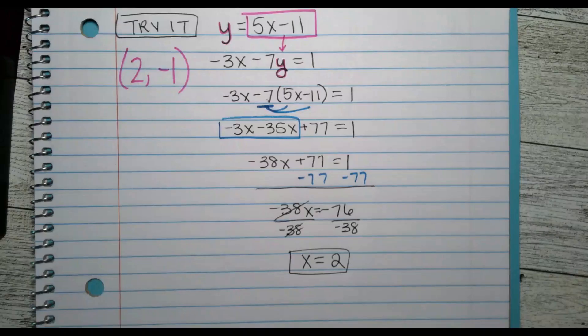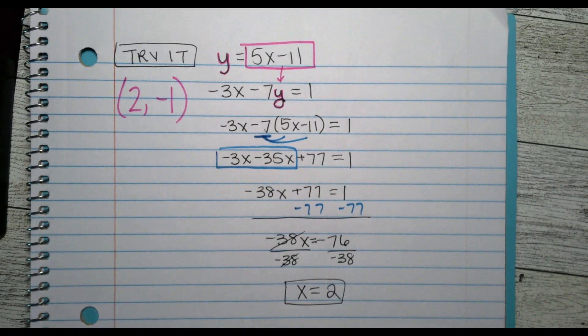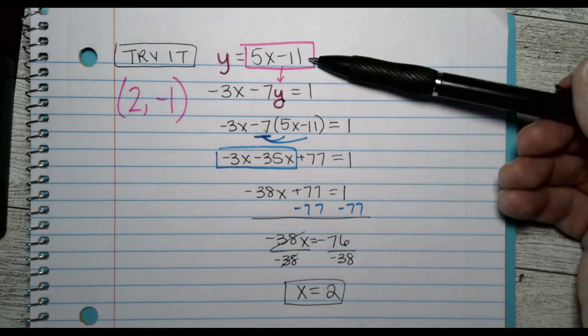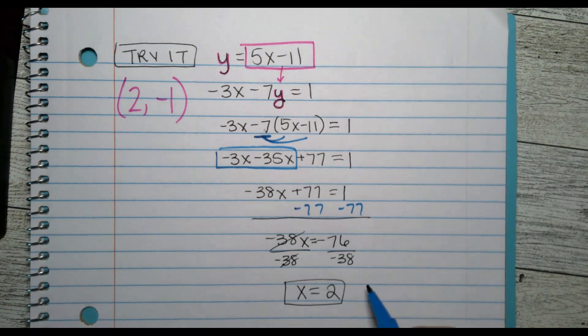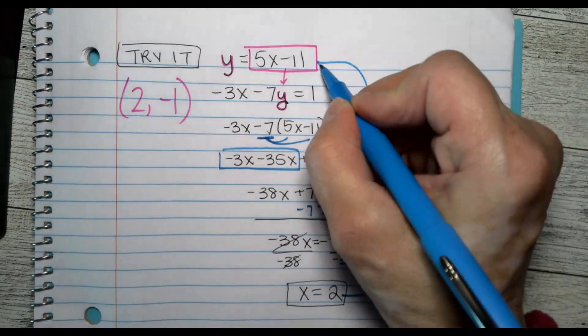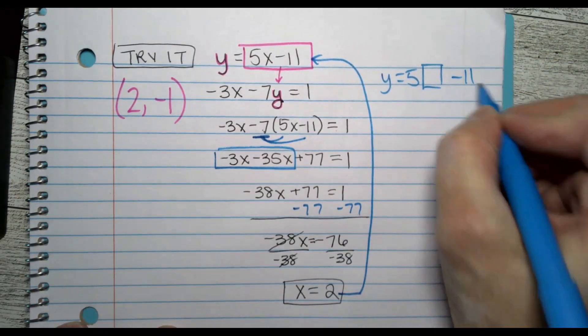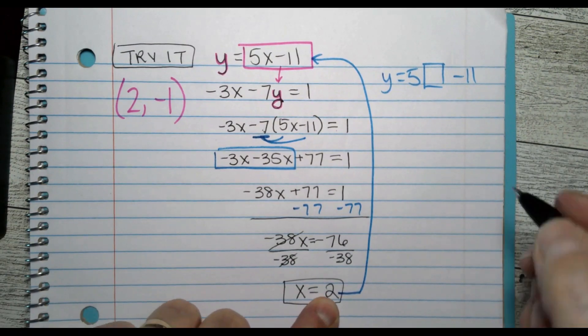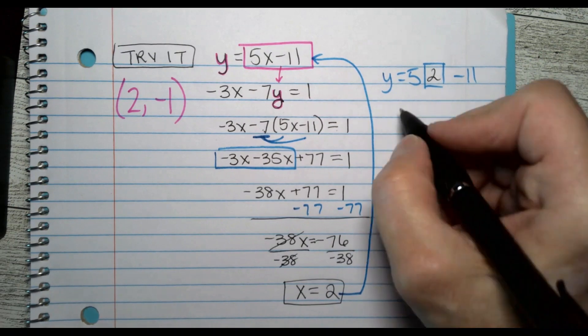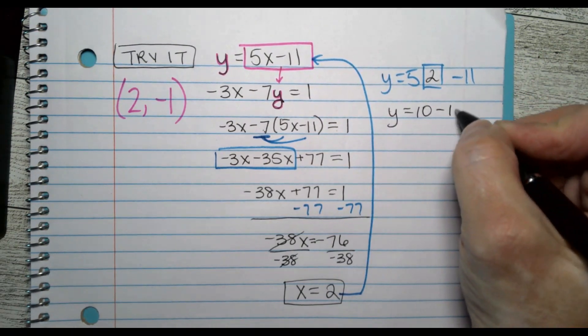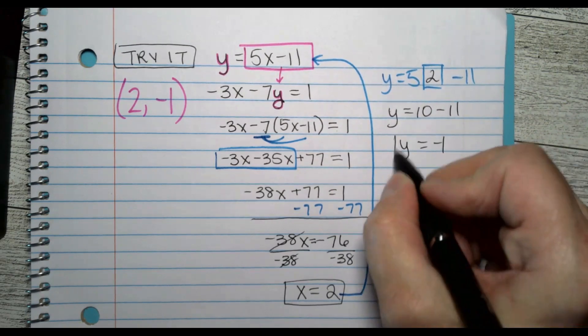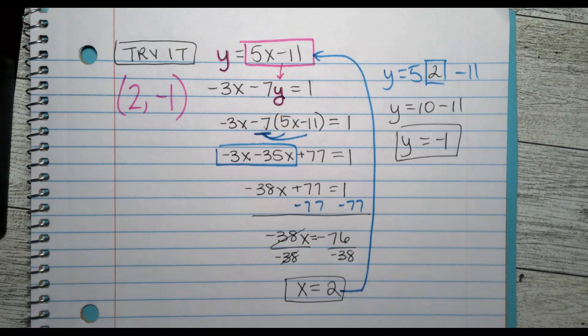Now we've got to go back and find the y. You pick which equation you want to use. Usually there's going to be one that's less crappy than the other. I'm going for that one right there to solve for my y. So y equals 5 times something minus 11, and the something we just figured out is 2. So I'm getting y equals 10 minus 11, so y equals negative 1. So your ordered pair is 2, negative 1. If you don't understand, let me know.